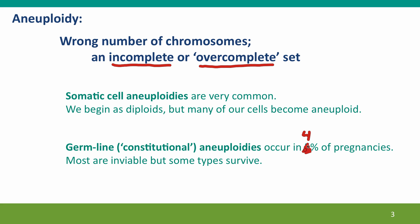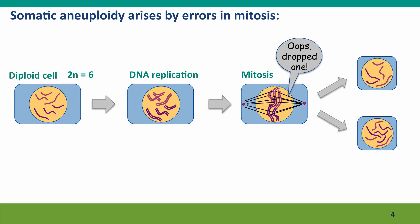I think the right number here is four percent of all pregnancies are aneuploid. Now, somatic aneuploidy arises by errors in mitosis, and these errors are similar to, but less dramatic than, the errors that produce tetraploid cells.